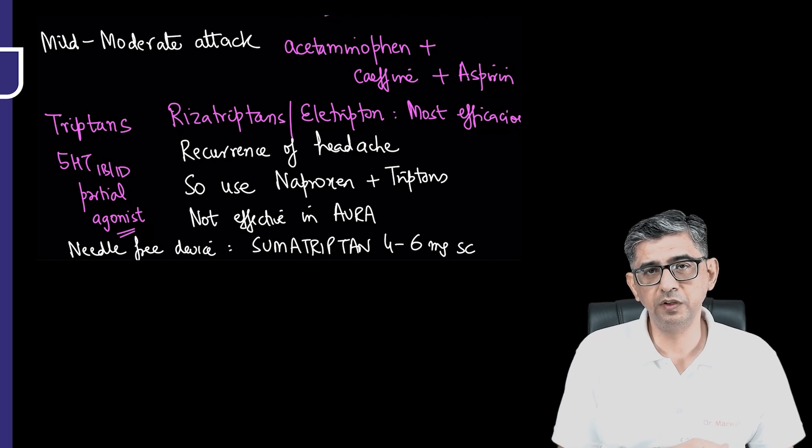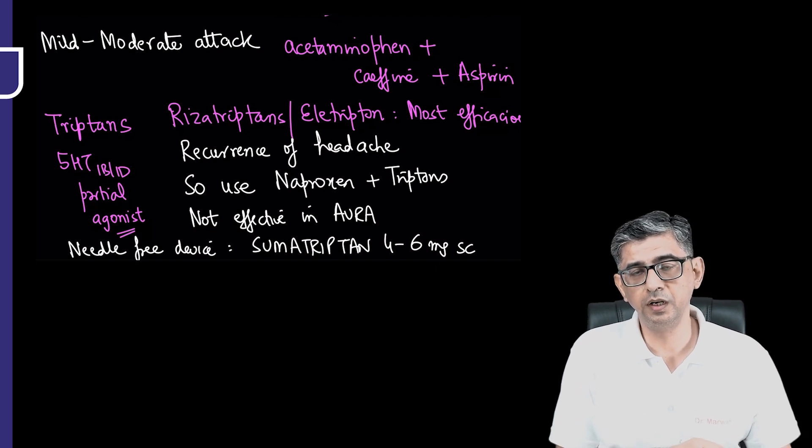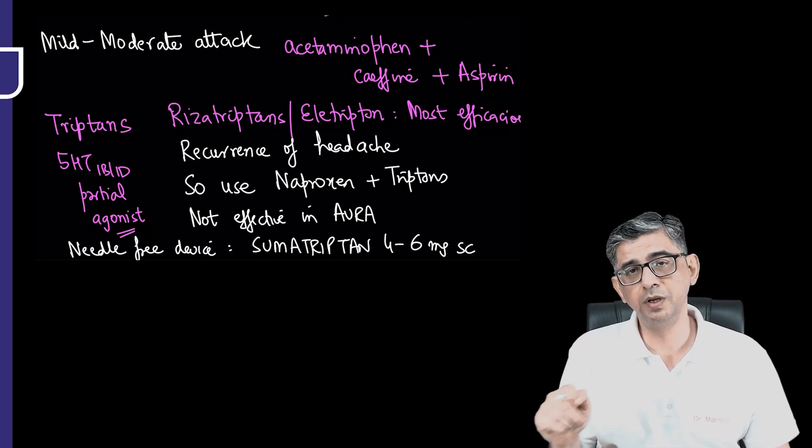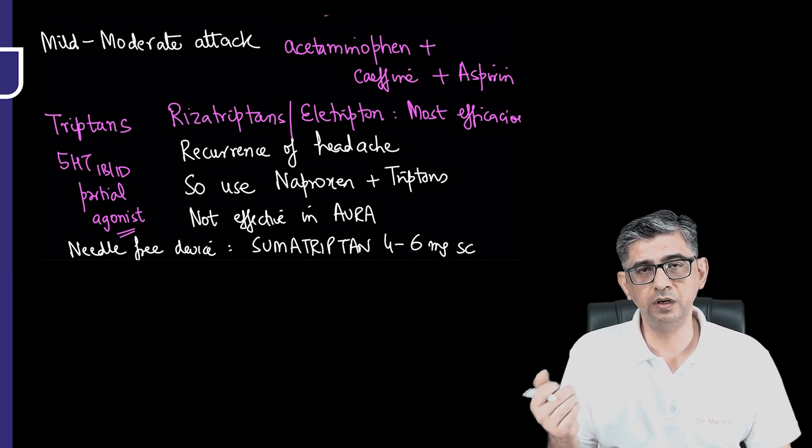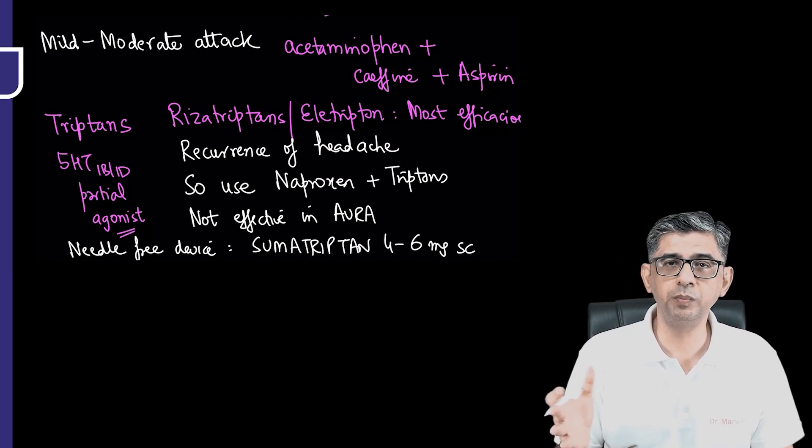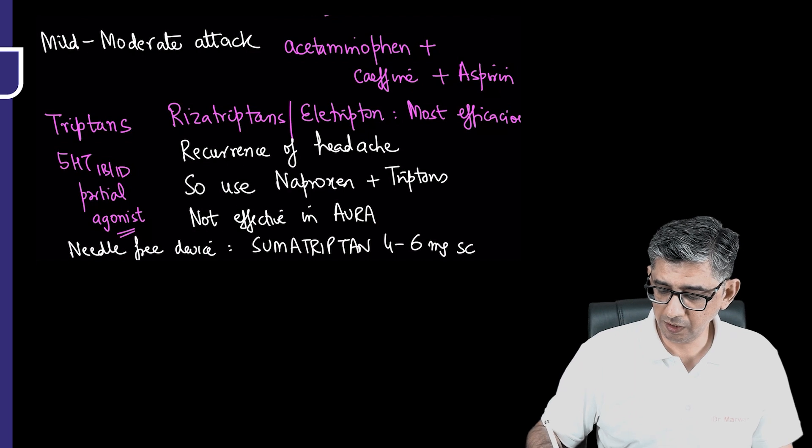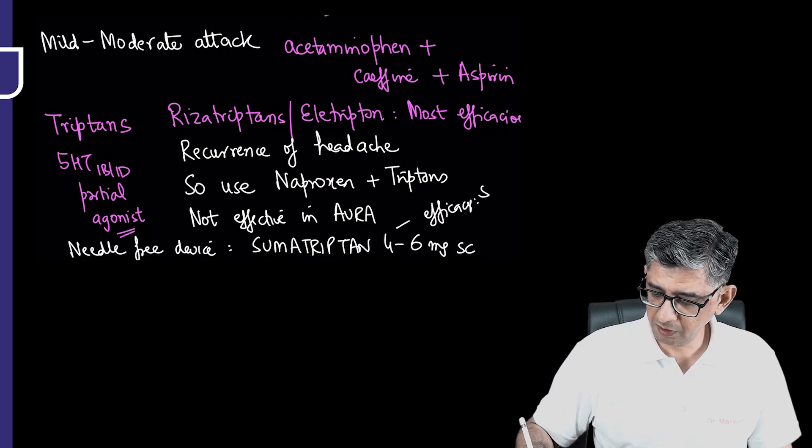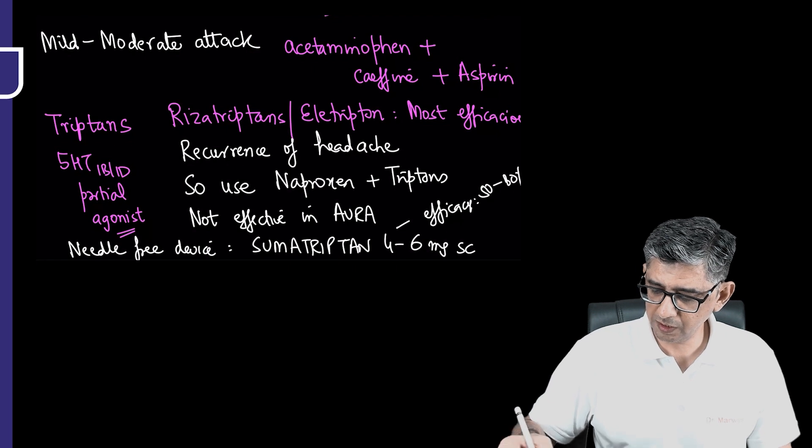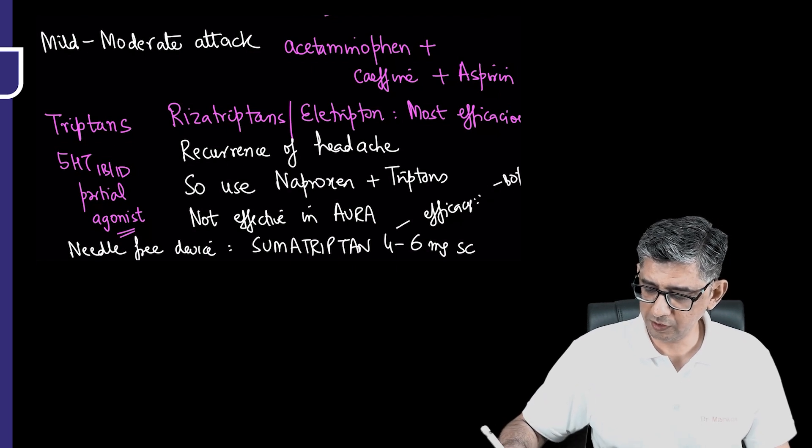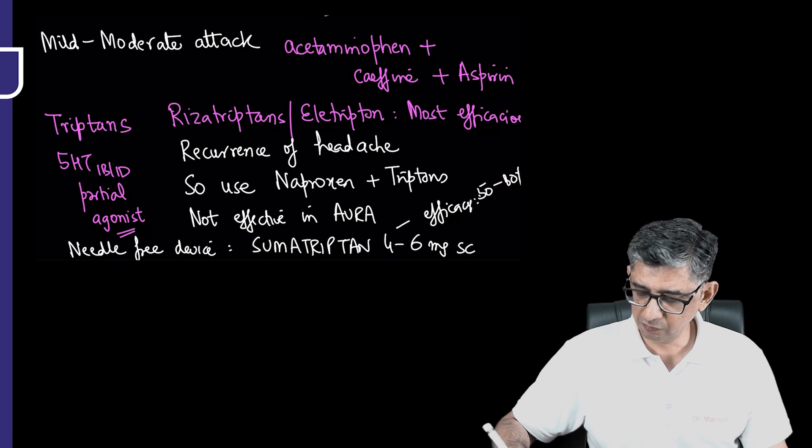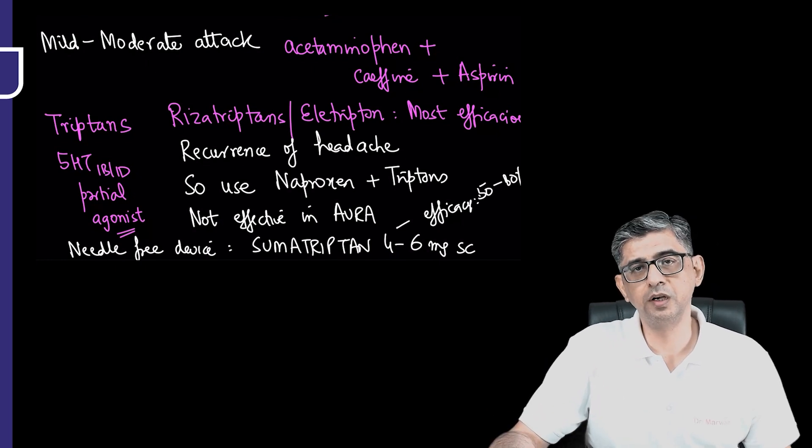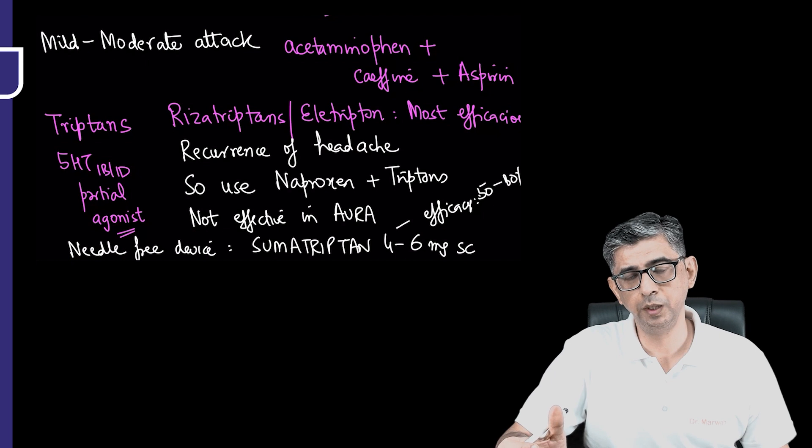On a comparison basis, dihydroergotamine, if we give one milligram subcutaneous or intramuscular, the efficacy would be 80 to 90 percent. I repeat again, efficacy of sumatriptan if given as a parenteral shot to relieve a severe headache component could be in the range of 50 to 80 percent. If you compare this with one milligram shot of dihydroergotamine, the efficacy would be 80 to 90 percent.